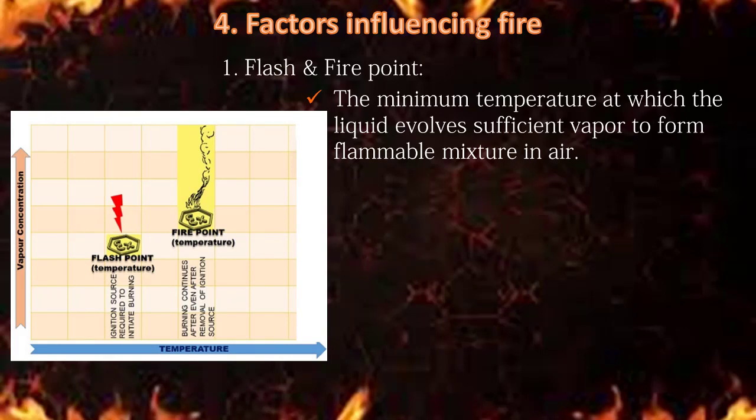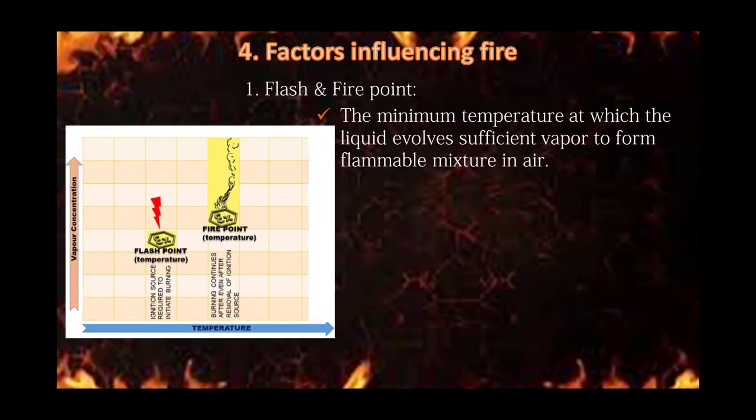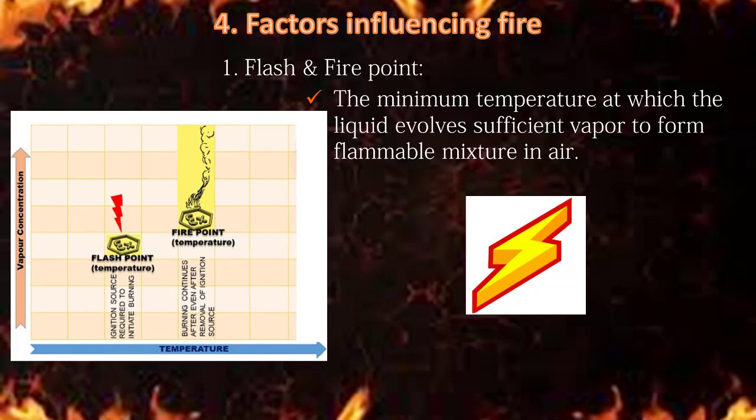The next topic is factors influencing fire. Fire cannot occur under all circumstances. Typically, fire comes from a chemical reaction between oxygen in the atmosphere and some sort of fuel — wood or gasoline. Wood and gasoline don't spontaneously catch fire just because they are surrounded by oxygen. For the combustion reaction to happen, you have to heat the fuel to its ignition temperature. Also, the mixture of fuel and oxygen should be a certain composition. So what are the influences?